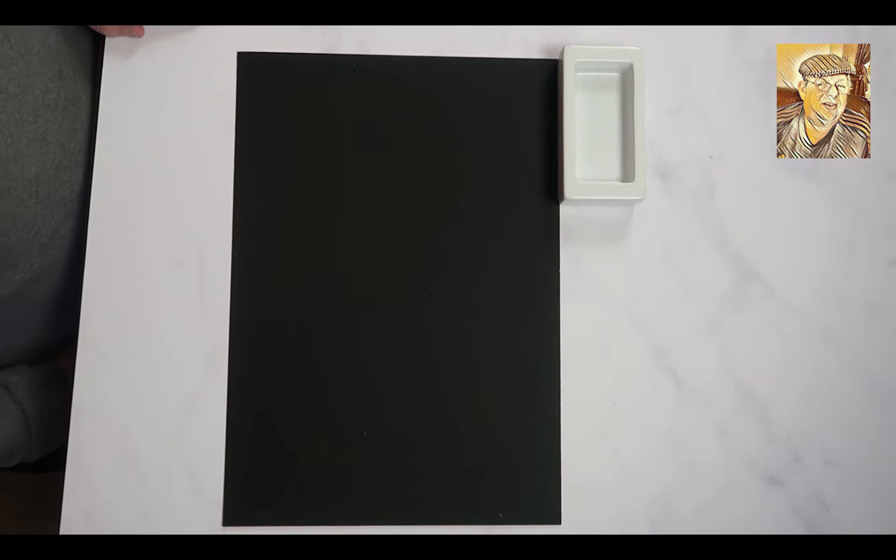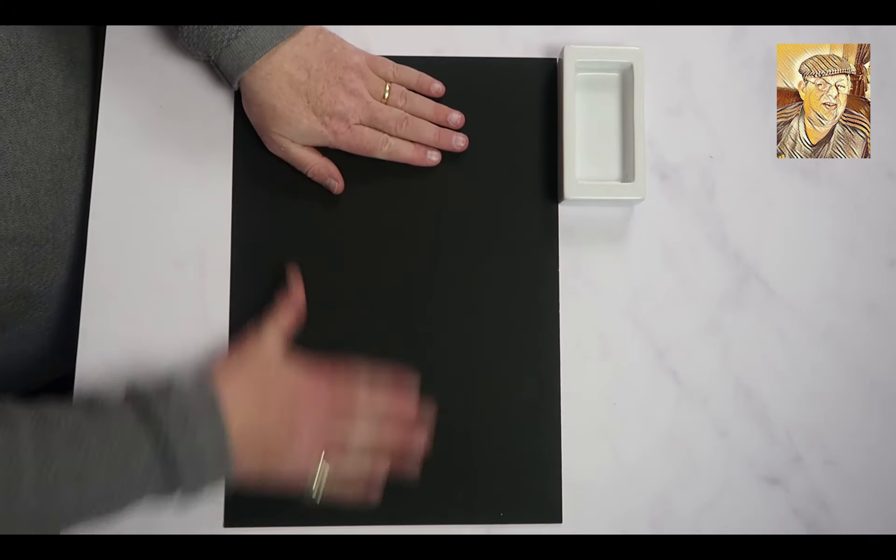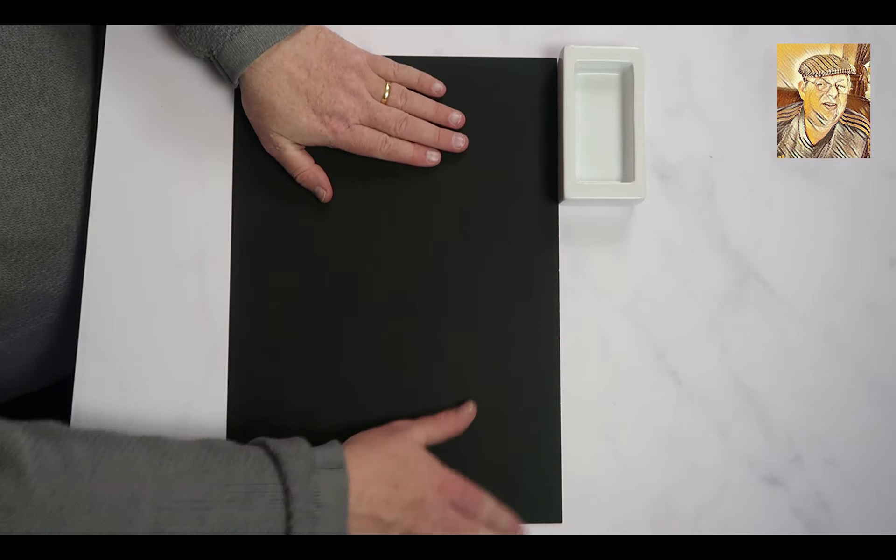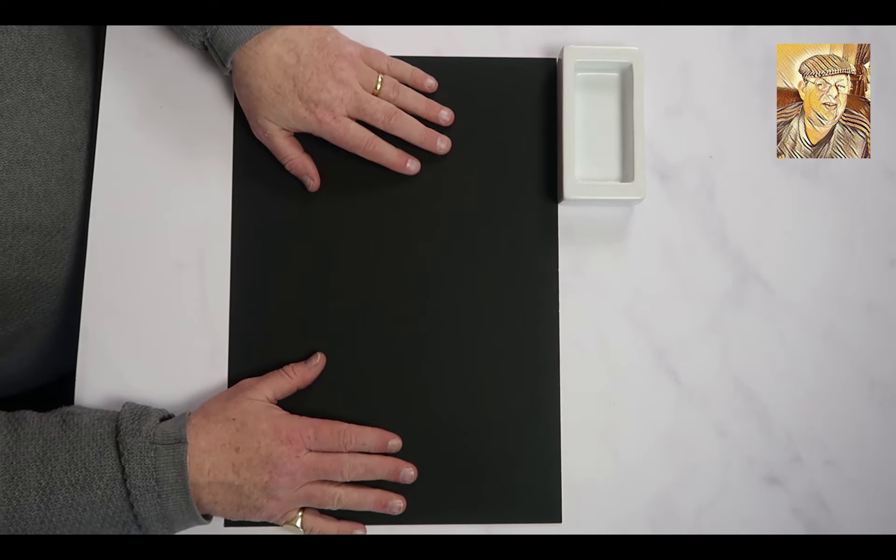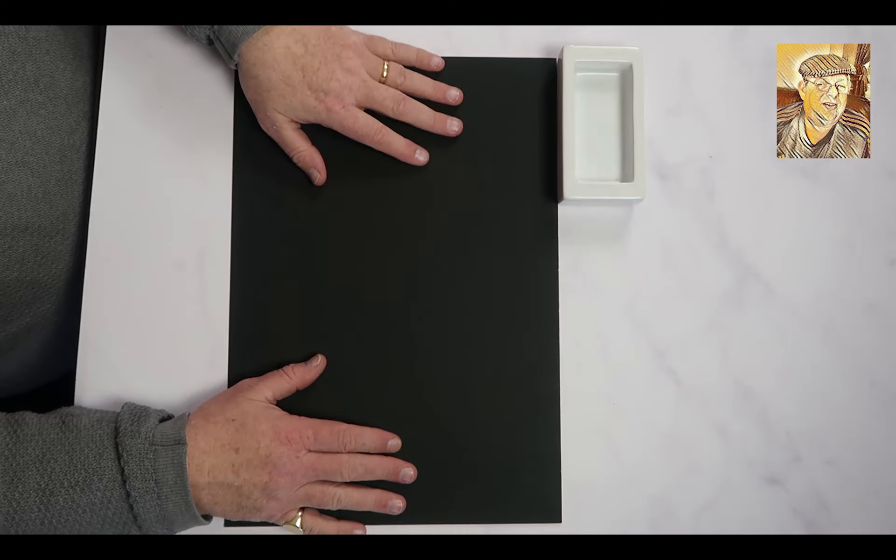In this video we're going to be looking at how I clip counters and cards. I thought I'd start by showing you the various bits and pieces that I use. So I'm using this black board just so you can see the contrast between the counters and the table.